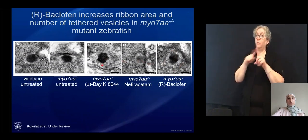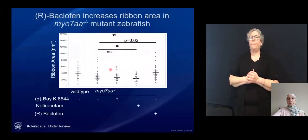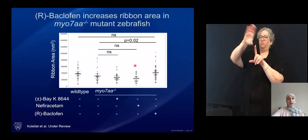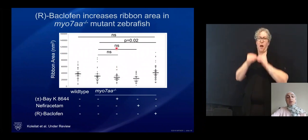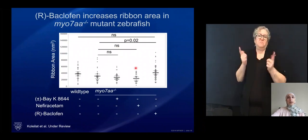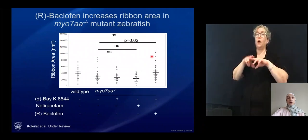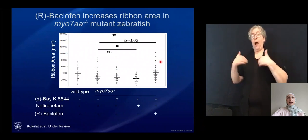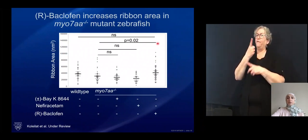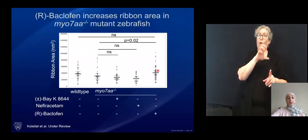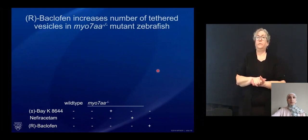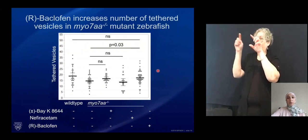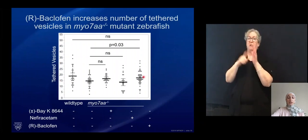We identified that neither plus-minus BK nor nephrosetum had any significant effect on the ribbon area. However, we did see a statistically significant increase in ribbon area upon incubation with R-baclofen, which was indistinguishable from wild type. The same holds true for the number of tethered vesicles: the number of vesicles in the halo around ribeye are indistinguishable from wild type upon incubation with R-baclofen.